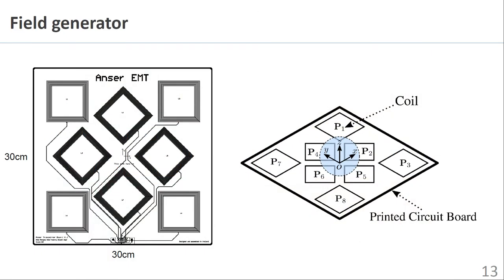ANSWER EMT features a printed circuit board field generator comprising eight discrete coils. The location and dimensions of each coil are precisely known relative to the center of the circuit board. A frequency domain multiplexing approach is used where each coil transmits its own distinct frequency in the kHz range.